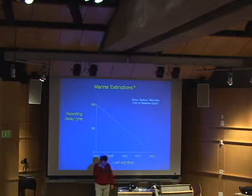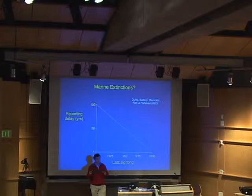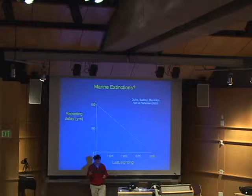A few years ago, Nick Dulvy and Yvonne Sadovy and I did a review in which we looked for extinctions — cases of extinctions in the marine habitat. We didn't have to look at just global extinctions, but also including regional extinctions. And by extinction, I do actually mean gone — not just collapsed or strongly declined. This is where there was reasonable evidence that people had looked fairly hard for something and it didn't seem to be there anymore. These are actual regional and local extinctions.